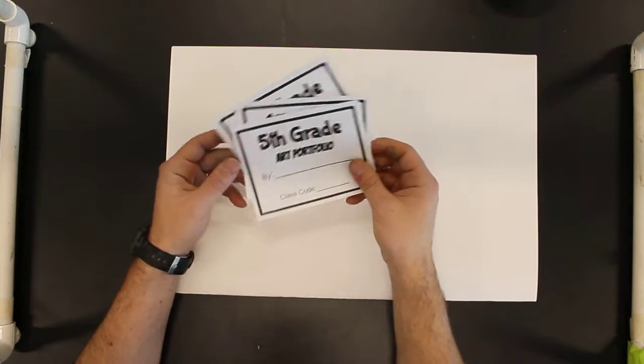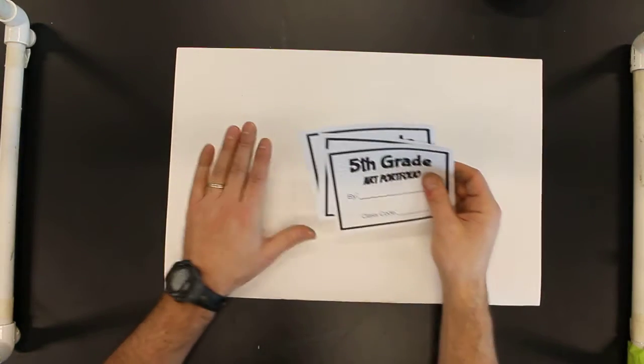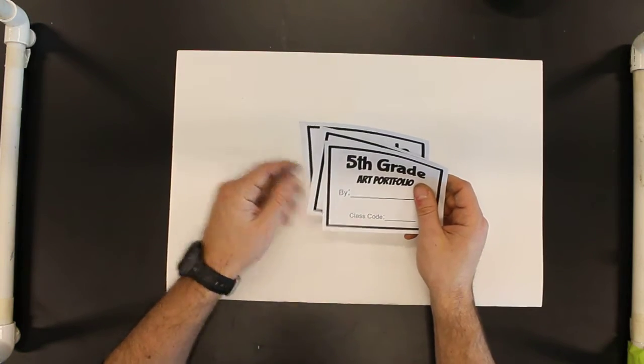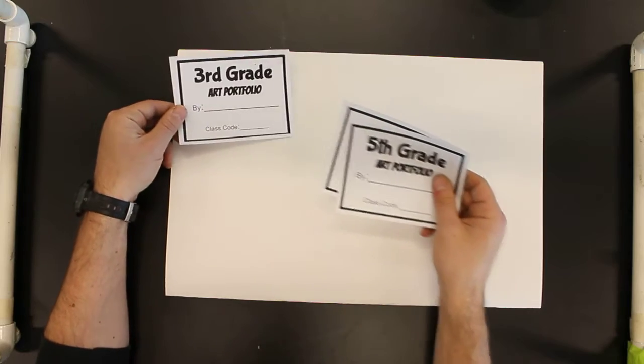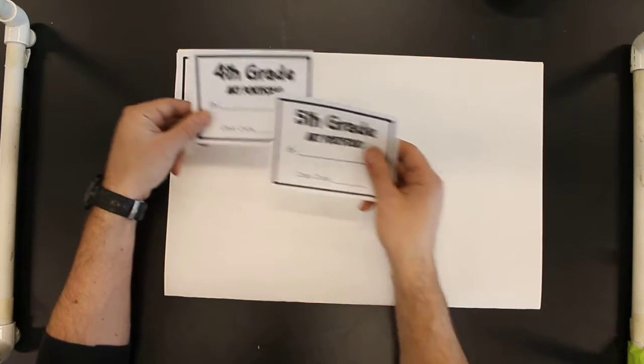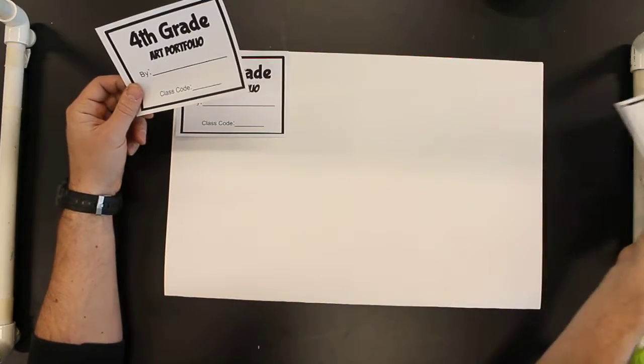We're going to keep our name tags in the upper left-hand corner. So 3rd grade, 4th grade, or 5th grade - doesn't matter which grade level you're in - they're all going to be the same.